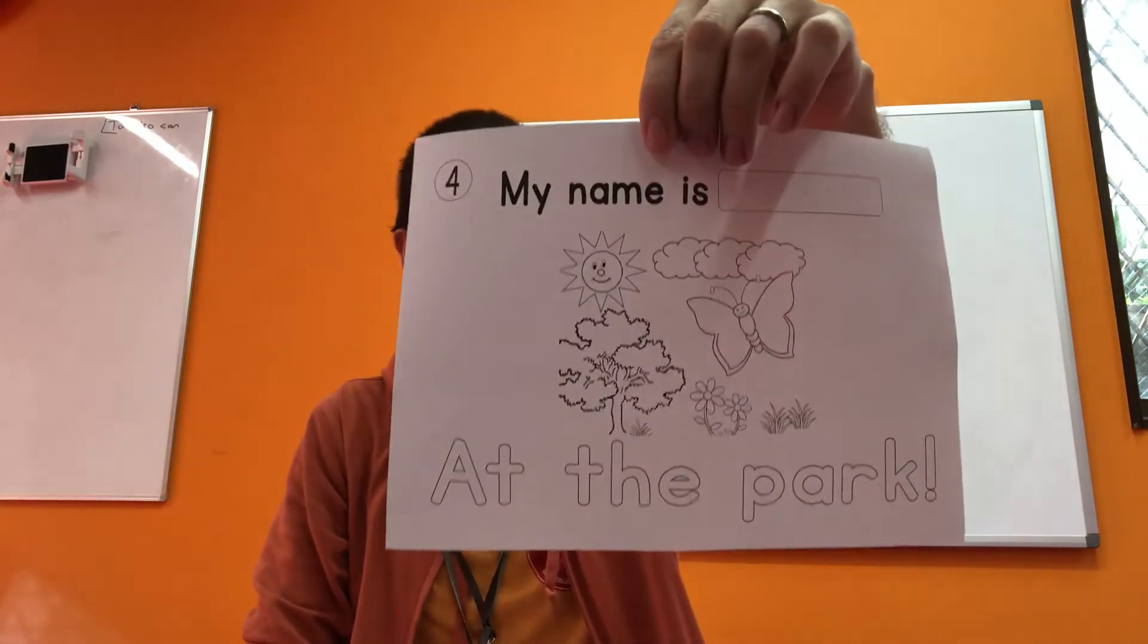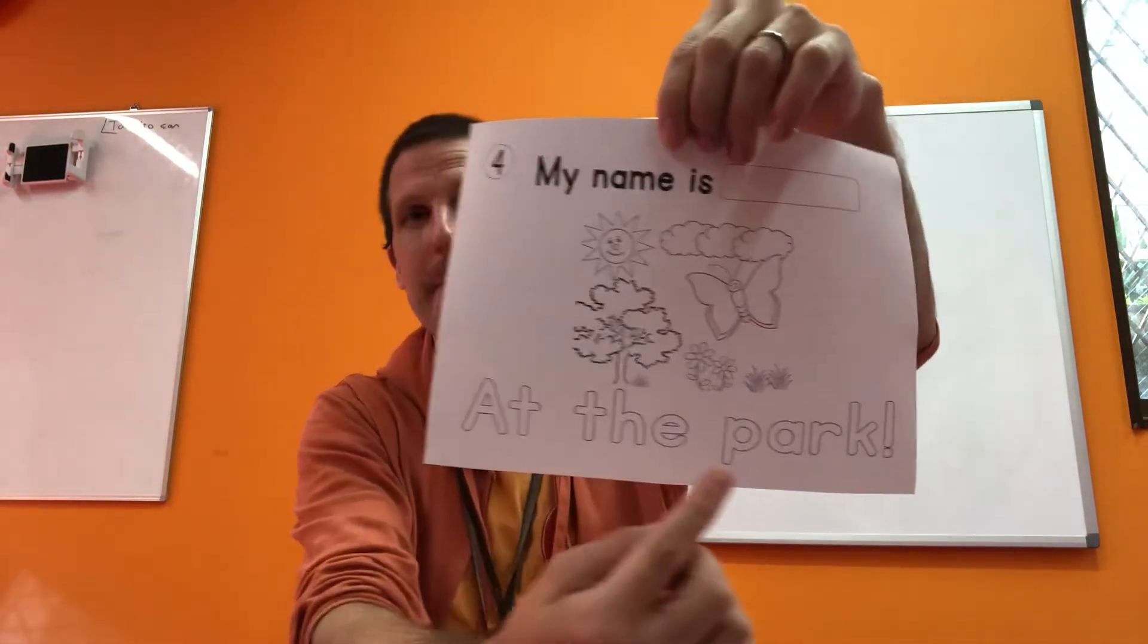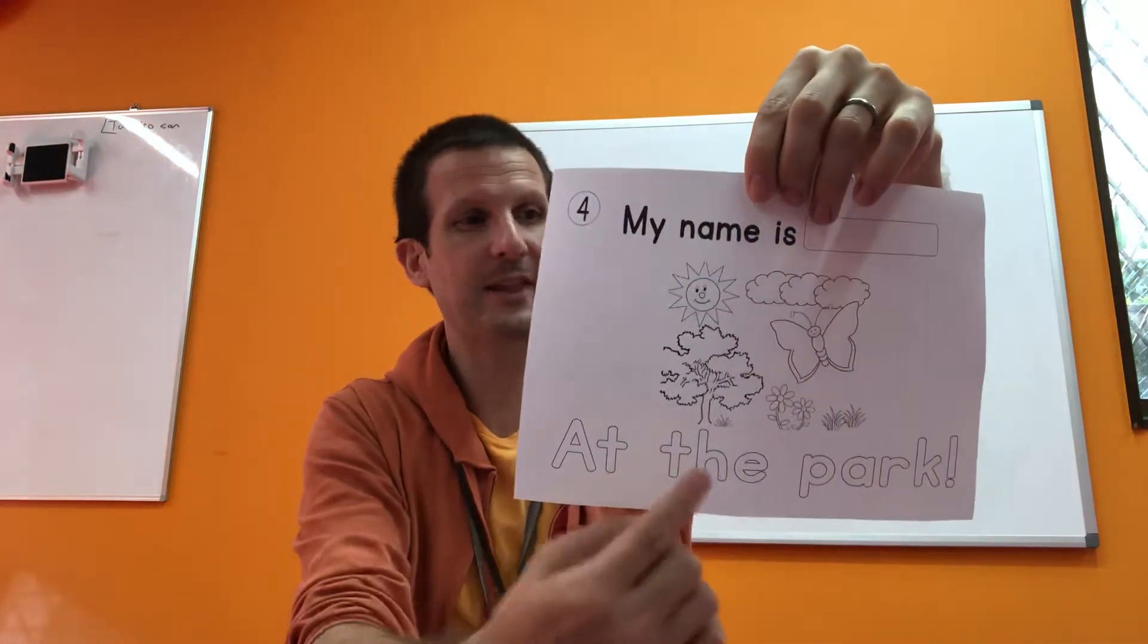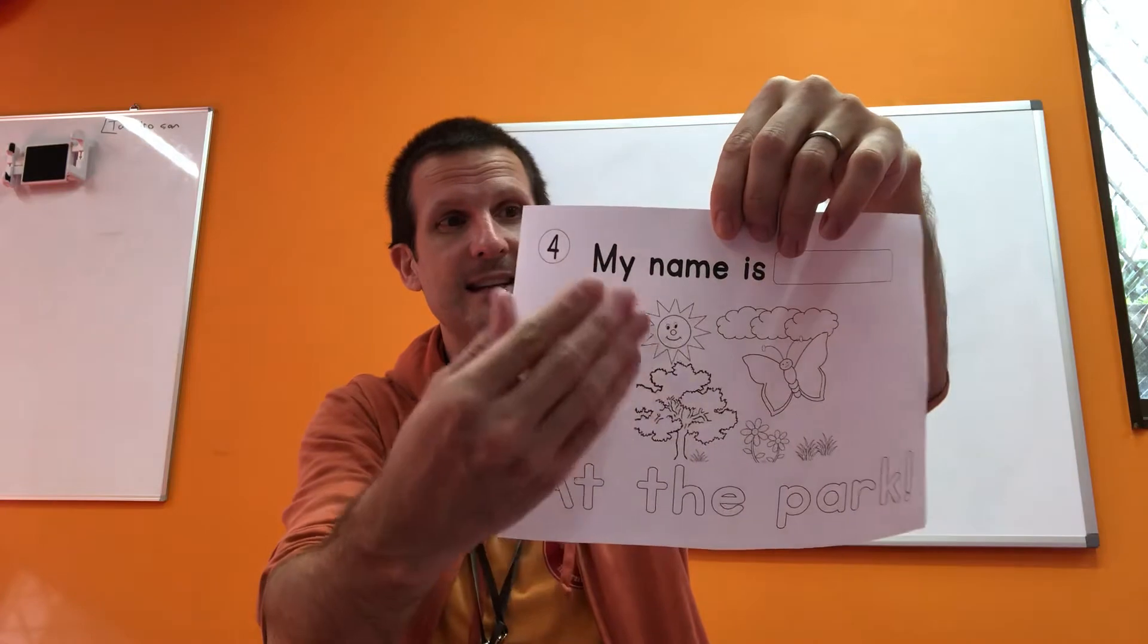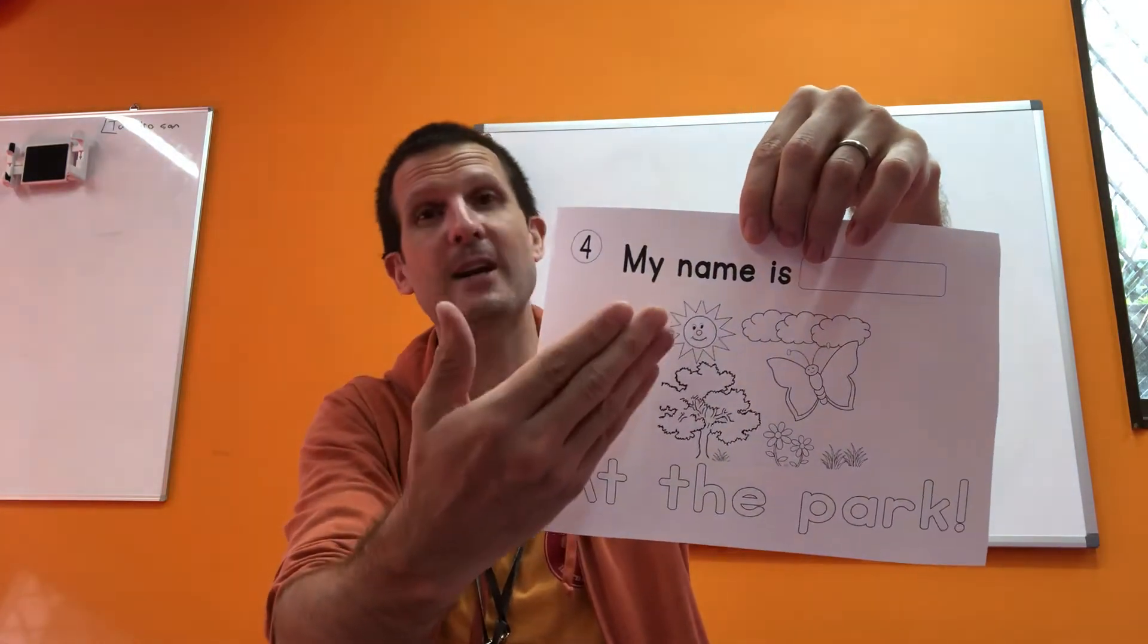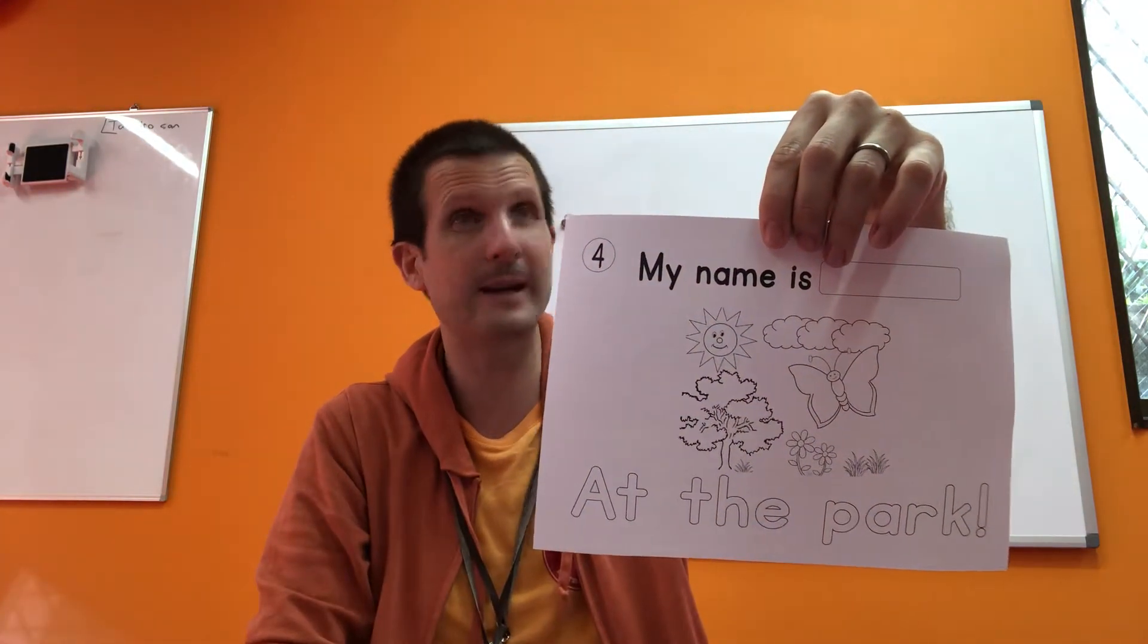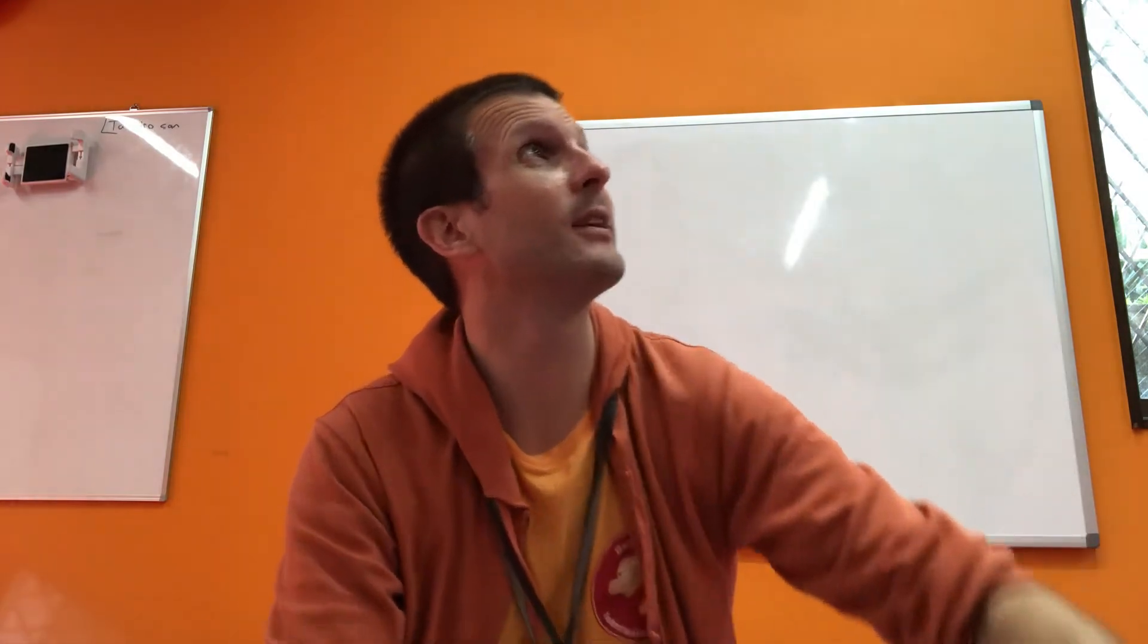Okay, this is number four. Number four says at the park. At the park. Okay, you can color the green trees and the yellow sun. Let's make it a red sun actually because it is hot, right? Oh, careful, let the door open. Hi, morning.